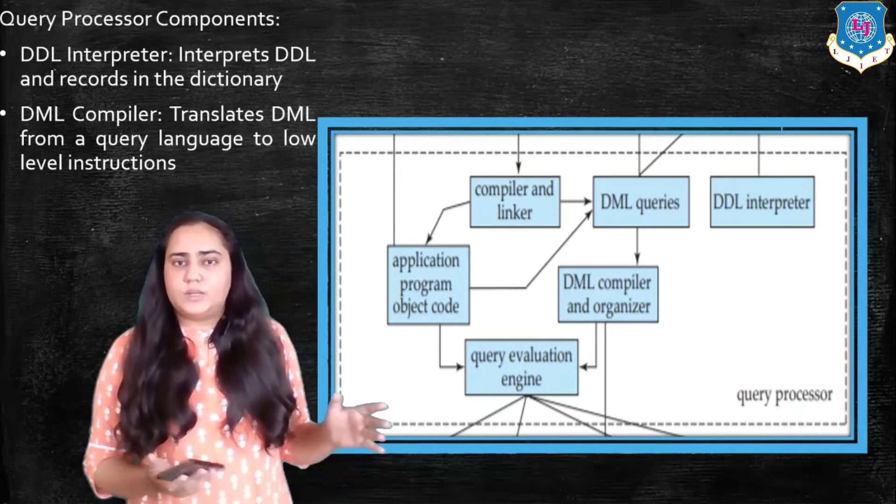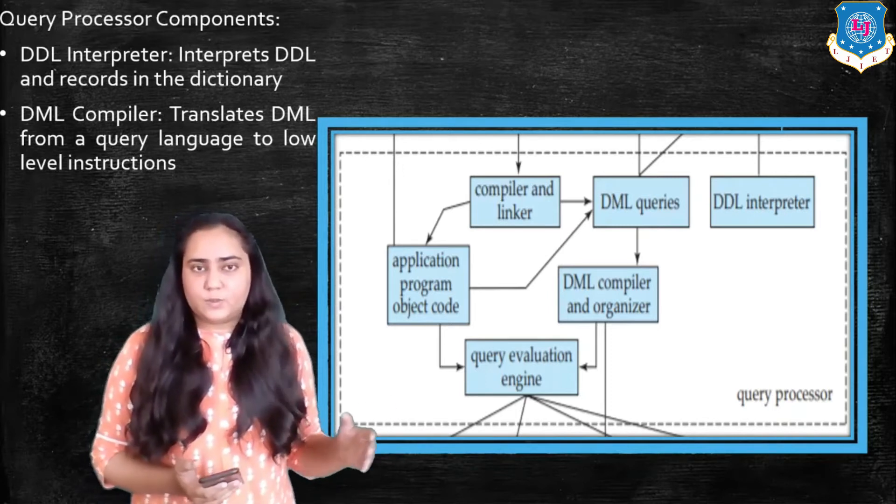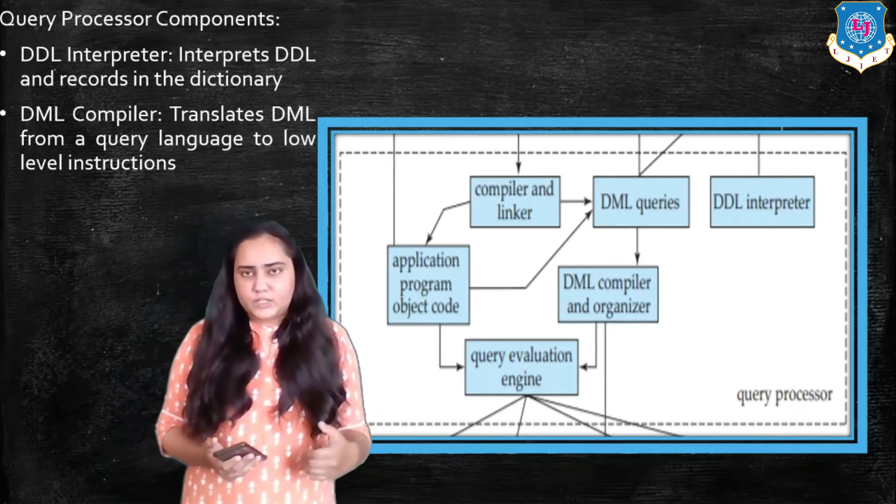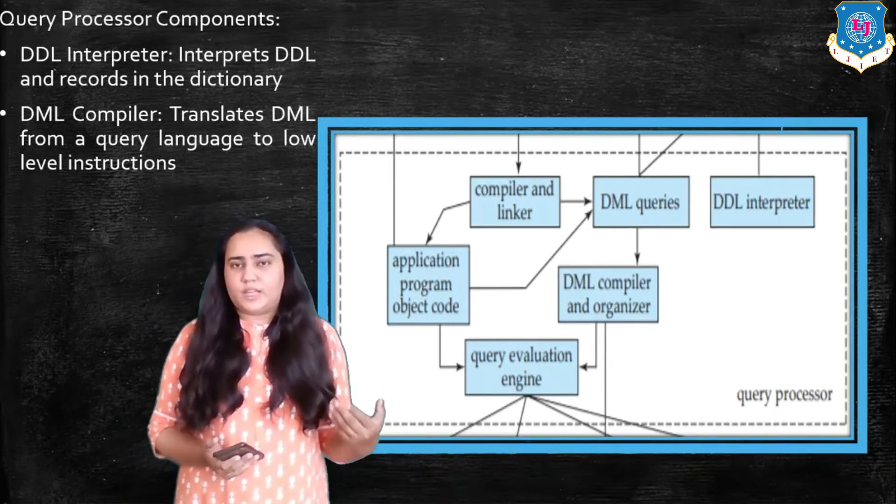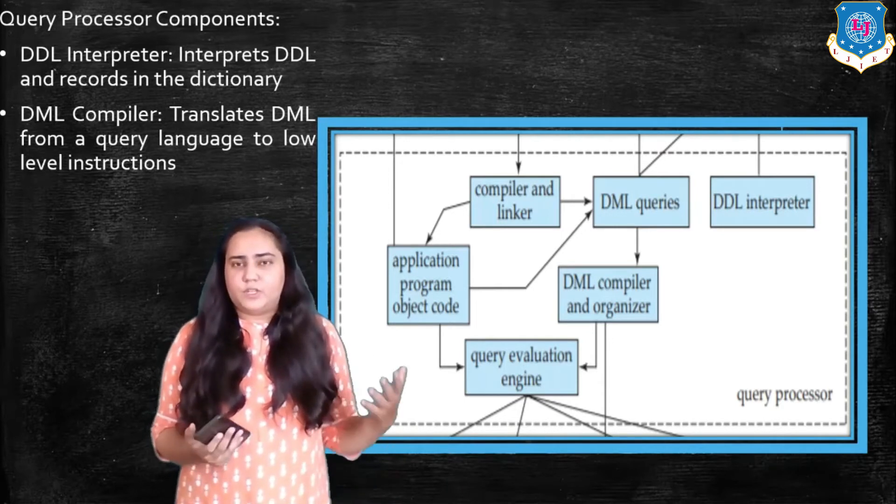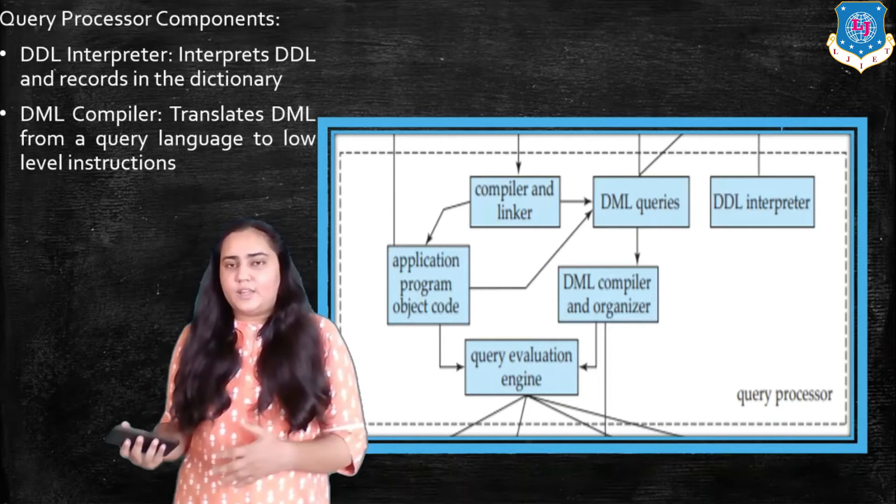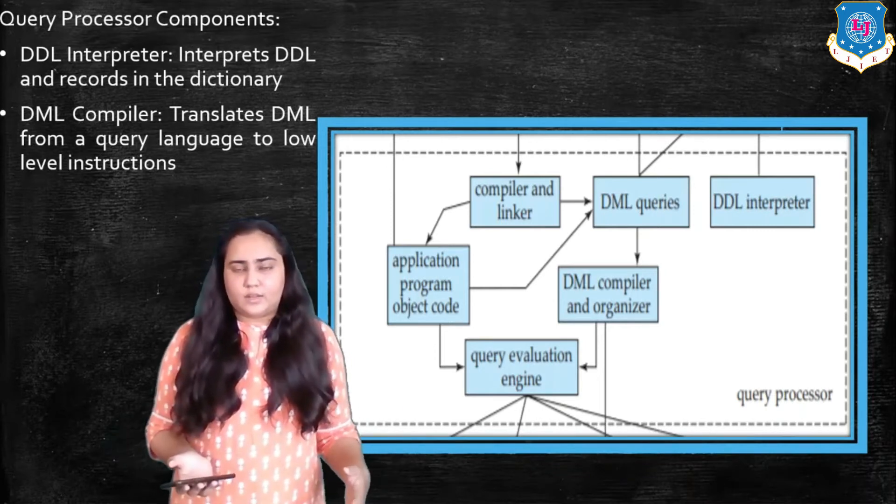Now you need to understand at this point the difference between a compiler and an interpreter. An interpreter works more like an on the spot translator. If you're watching something on television where there's a person speaking a foreign language which people do not understand, so there's a translator present who translates at that moment whatever the person is speaking.